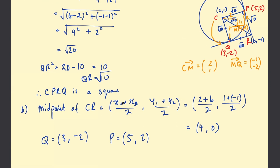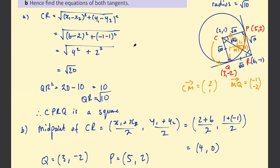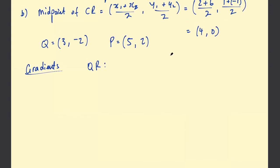So let's firstly find the gradients of those lines. Let's do QR first. The gradient QR, remember the point R was (6,-1). So to find the gradient that's rise over run. The rise is -1-(-2) over 6-3.